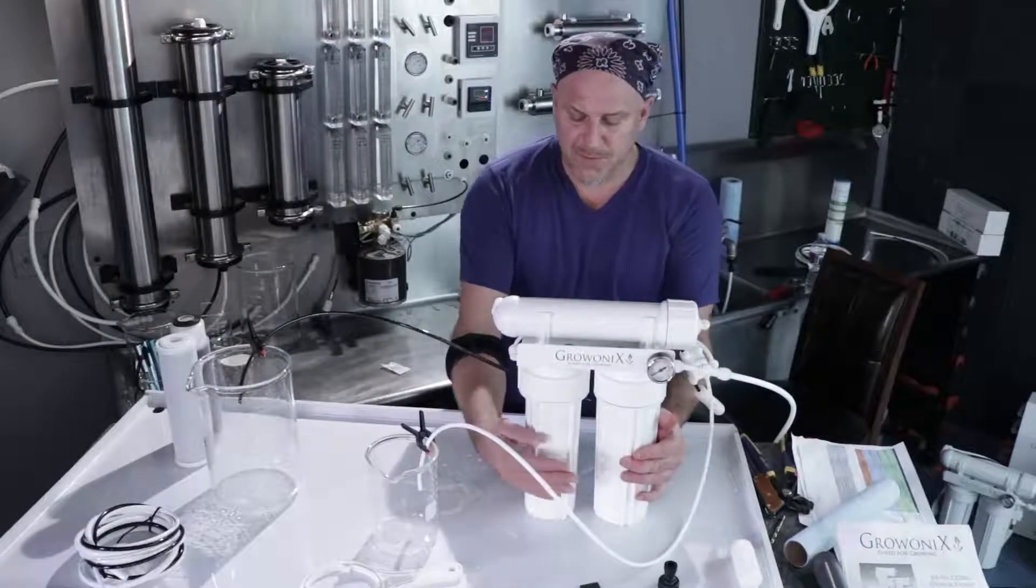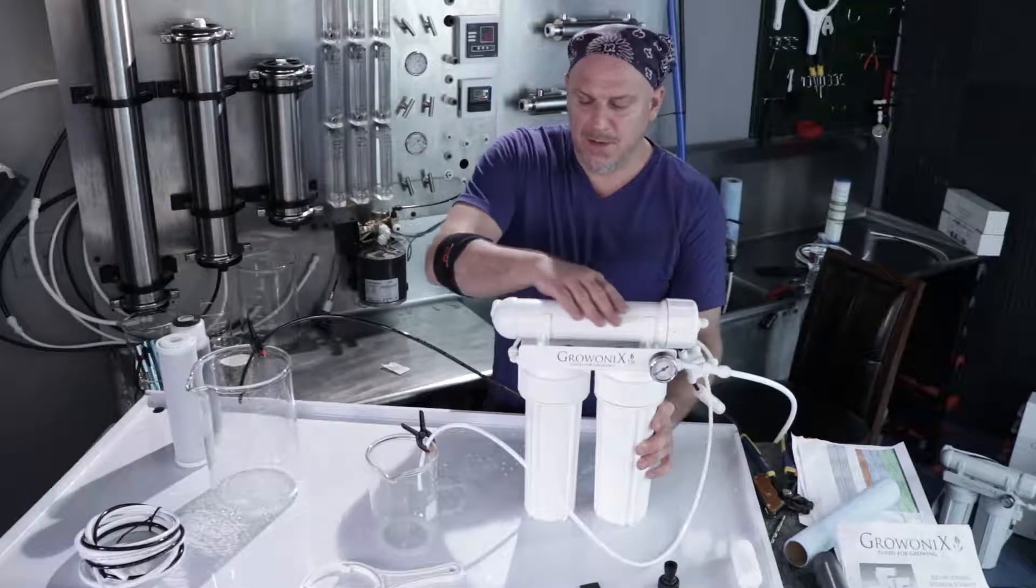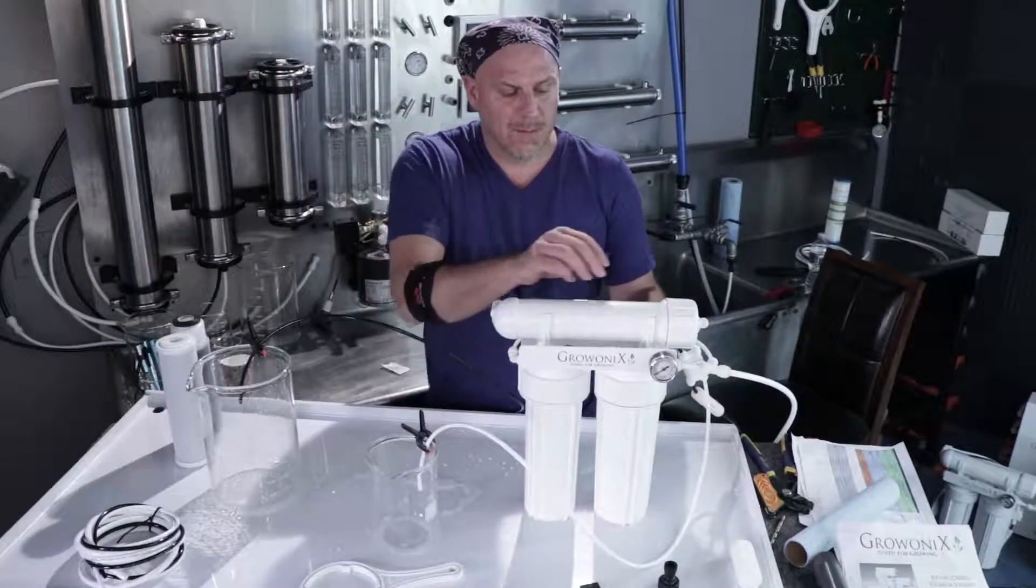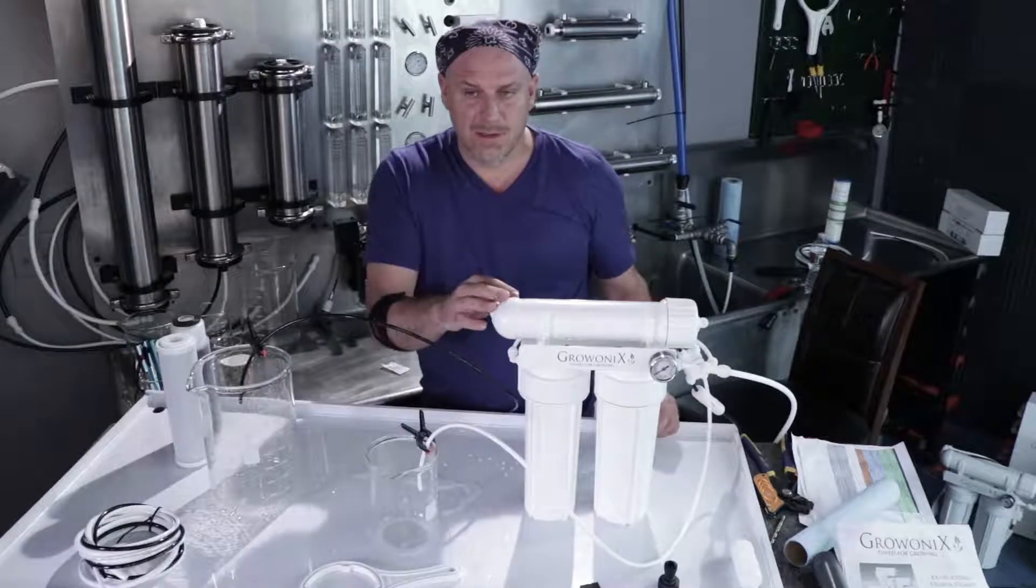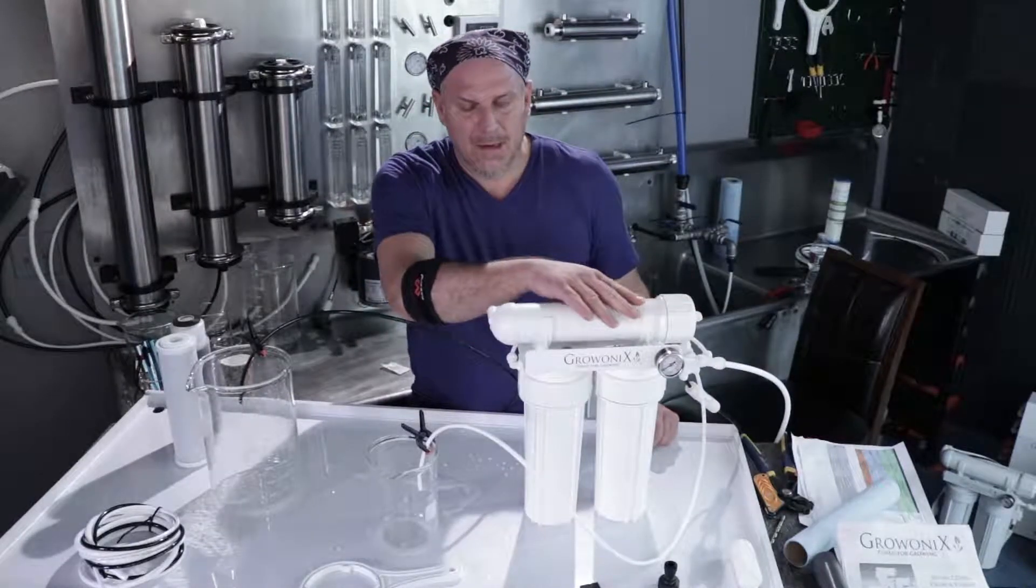So we flushed the pre-filters, the carbon's been flushed, now the water is going to enter the membrane to flow this way and then out to the drain kit. The membrane through manufacturing has a storage solution in it, it's a dry food grade glycerin and we want to flush it out.